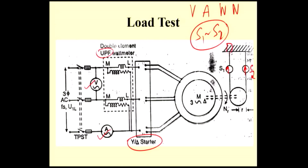Then gradually you have to increase the load. There is a wheel on the brake drum arrangement. By rotating this wheel, you can increase the load on the motor — you are opposing the rotation, so the motor takes more current to overcome that friction and the current will increase. At that time, take the voltmeter, ammeter, wattmeter, speed, and S1 and S2 readings. You have to take readings up to the rated output power.